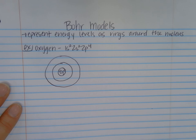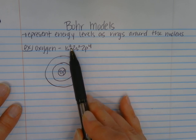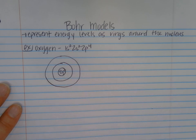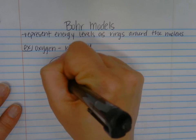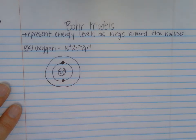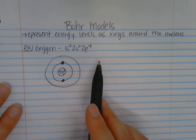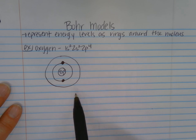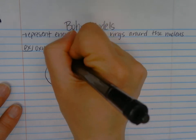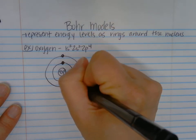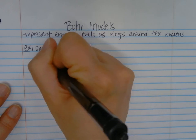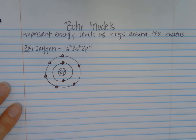The next question is how many electrons to put on those rings. This also comes from the electron configuration. 1s2 — the two in the exponent position tells us there are two electrons. So on the first, innermost ring of our Bohr model, I'm going to draw two electrons as dots on the circle. Now for the second energy level, I have 2s2 and 2p4. Yes, they're in different orbitals — s and p — but they're on the same energy level, which means 2 plus 4 is 6. So I have a total of 6 electrons on my second energy level. And that is a Bohr model of oxygen.